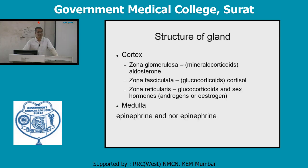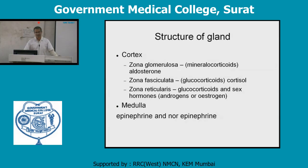This decrease in size occurs because during fetal life the cortex is thicker. To remember the three cortical zones easily: G, F, R — G for zona glomerulosa, F for zona fasciculata, and R for zona reticularis.